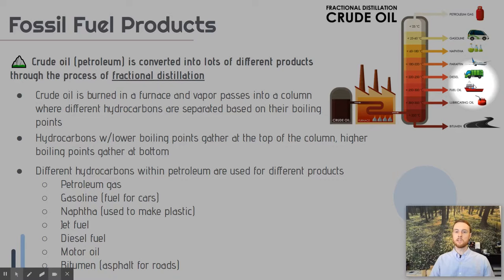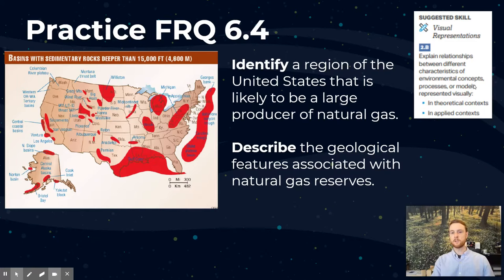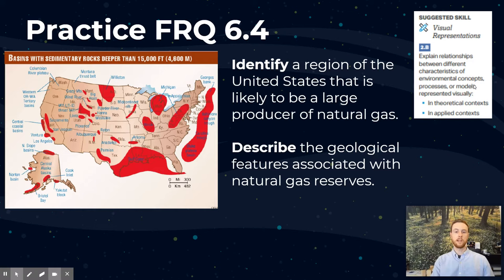For our practice question for topic 6.4 today, take a look at this map and identify a region of the United States that is likely to be a large producer of natural gas. Then try to describe the geological features associated with natural gas reserves — look at the areas on the map that would make a region likely to have a natural gas deposit.